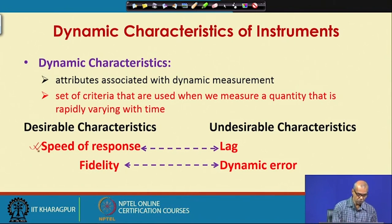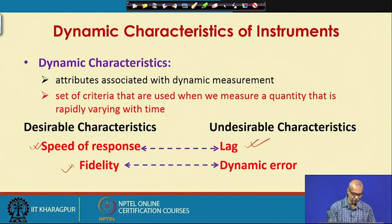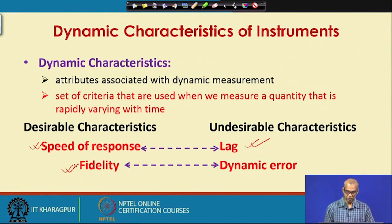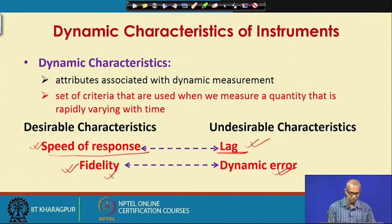Speed of response is a desirable dynamic characteristic — we want our instrument to have this characteristic. Lag is an undesirable dynamic characteristic. Similarly, fidelity is a desirable dynamic characteristic, and the corresponding undesirable dynamic characteristic is dynamic error. If speed of response is good, lag will be less, and similarly for fidelity and dynamic error.